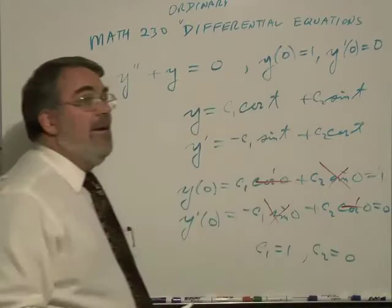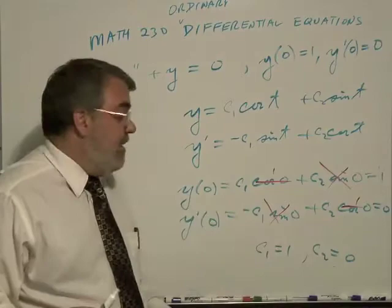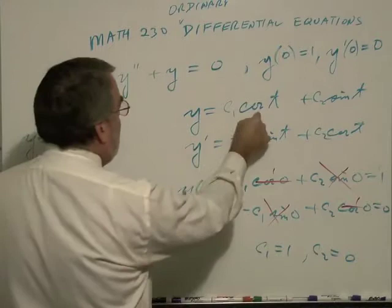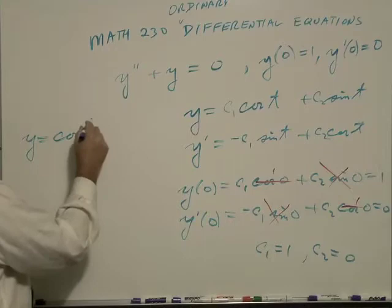So the initial conditions allowed me to solve for these initial constants. And now I have a particular solution to the problem, not a general solution, but a particular solution to this problem is y equals one cosine of t plus zero sine t. In other words, it's just cosine of t.